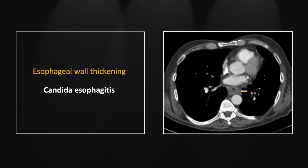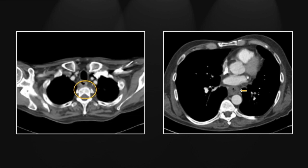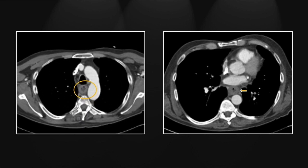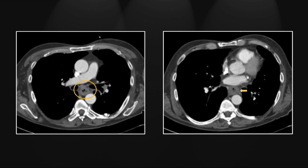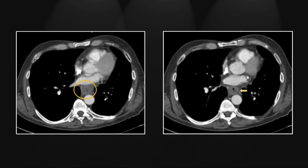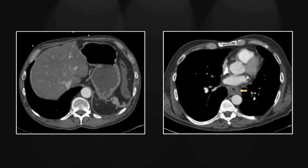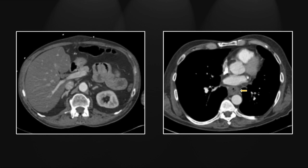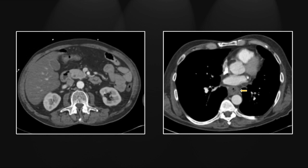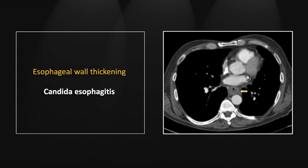There is extensive wall thickening throughout the length of the esophagus, and note as well the enhancement of the mucosa consistent with inflammation. You can really appreciate the extent of that wall thickening, which is present throughout the entirety of the esophagus. And it is that extent that should at least make you consider the possibility of candidal esophagitis, as opposed to reflux esophagitis or the more common forms.